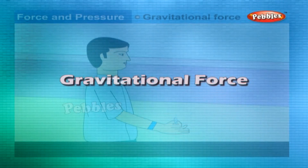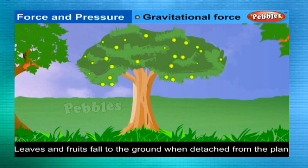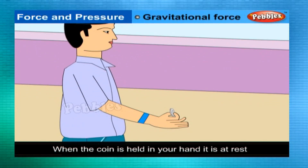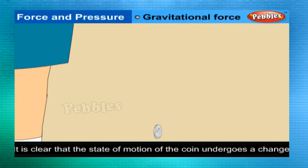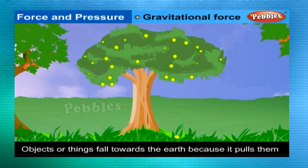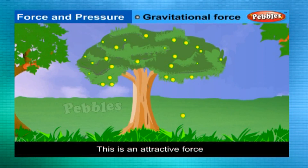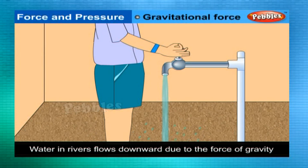Gravitational force: A coin or a pen falls to the ground when it slips off your hand. Leaves and fruits also fall to the ground when they get detached from the plant. When a coin is held in your hand, it is at rest; as soon as it is released, it begins to move downwards. Objects fall towards the earth because it pulls them. This force is called the force of gravity, or just gravity — it is an attractive force. Water and rivers also flow downward due to the force of gravity.